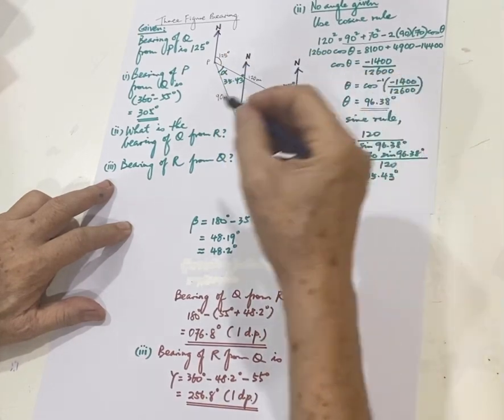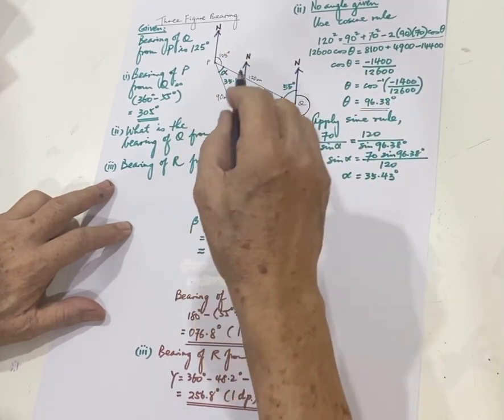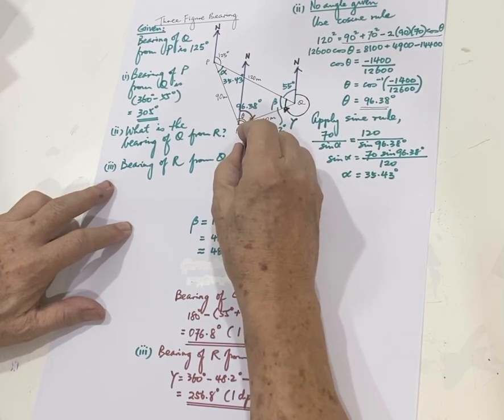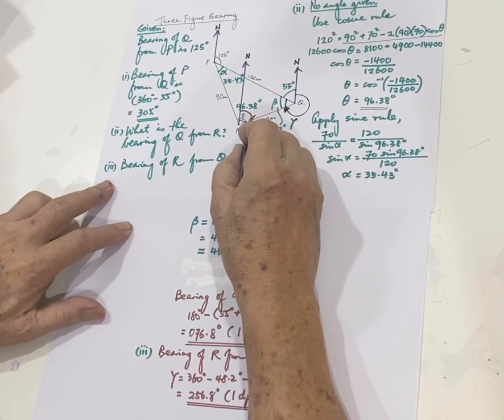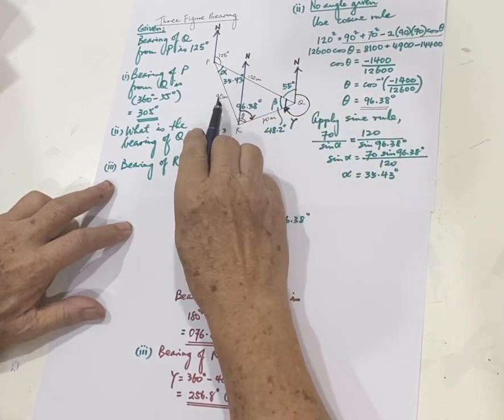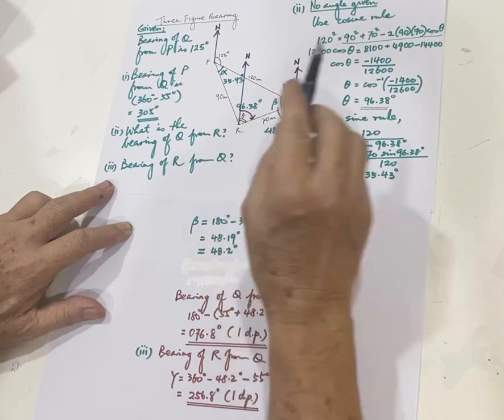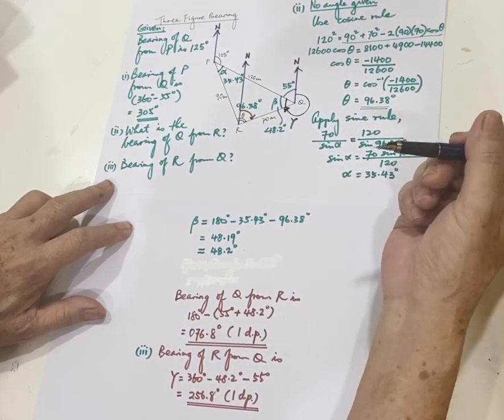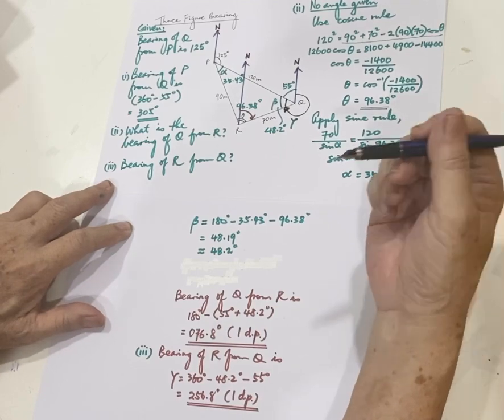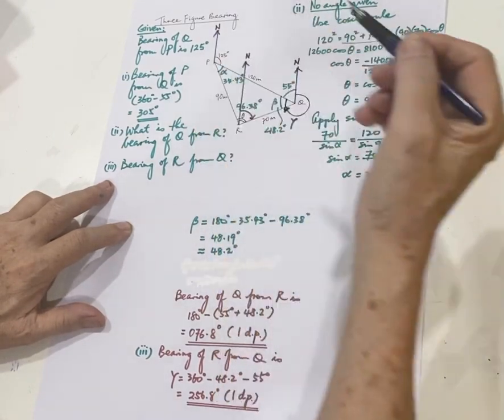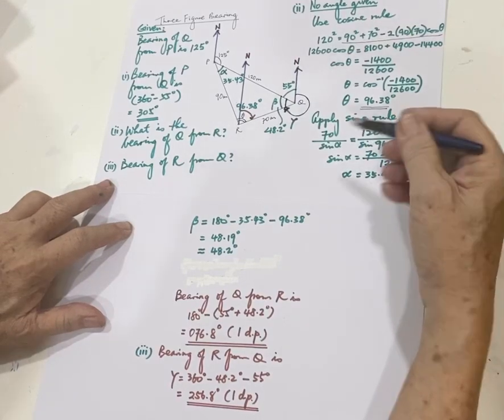Right. This is something interesting, because you want the bearing of Q from R. That means you want this angle, right? The thing is, opposite 90, I do not know the angle, but I would have to find it first. I would have to find it first anyway. Okay, so I will find alpha, I will find alpha. After that, I use 180 minus.